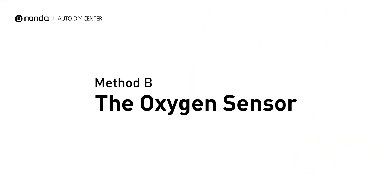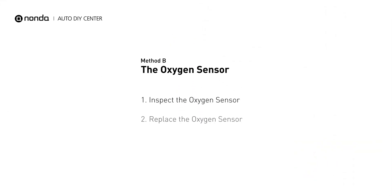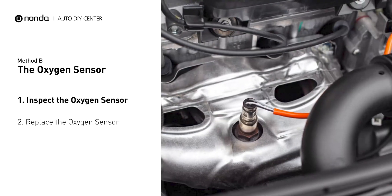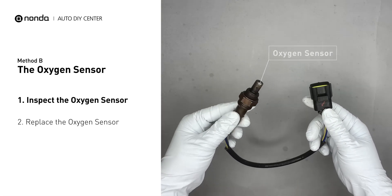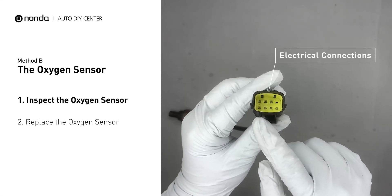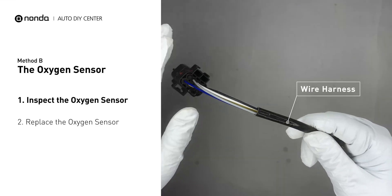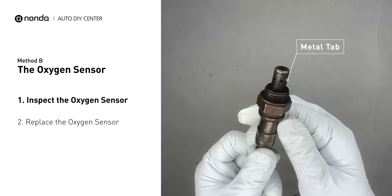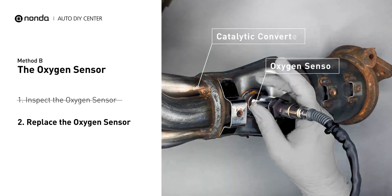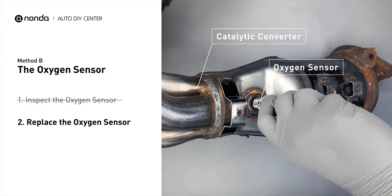Method B: the oxygen sensor. Oxygen sensors are mounted directly onto the exhaust pipe near the catalytic converter. Locate the sensor that responds too slow as it ages. Visually check the oxygen sensor's electrical connections, wire harness, and metal tabs for any damages. If damages are found, then replace the oxygen sensor.